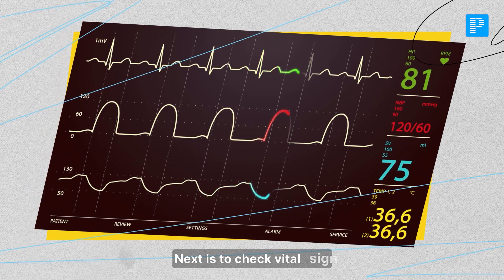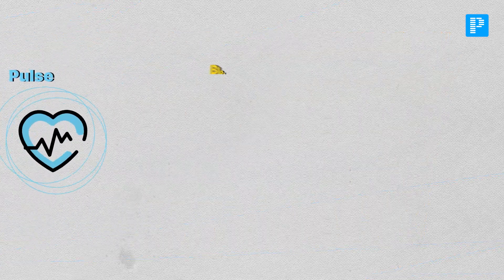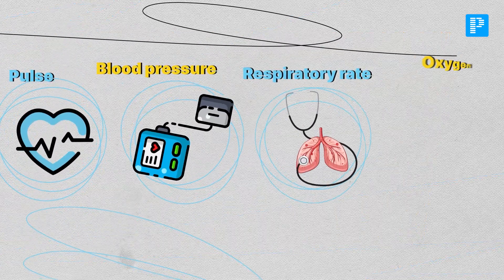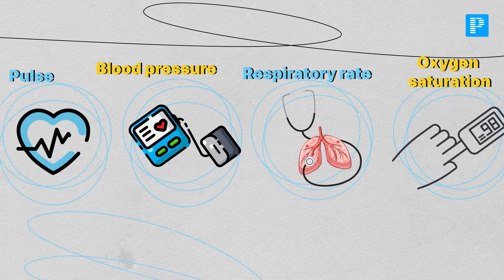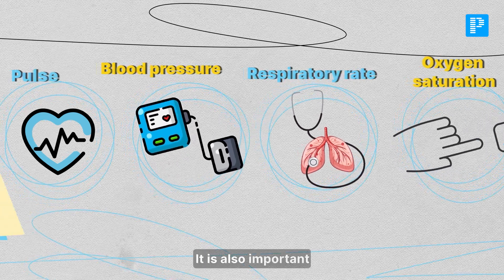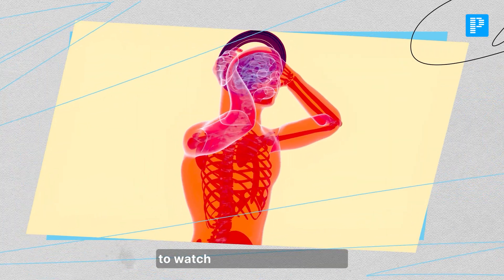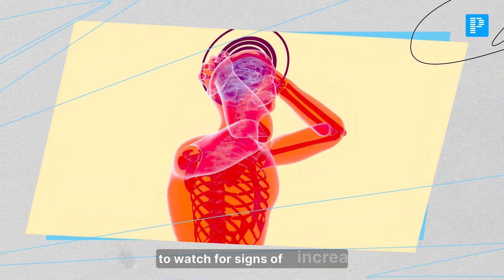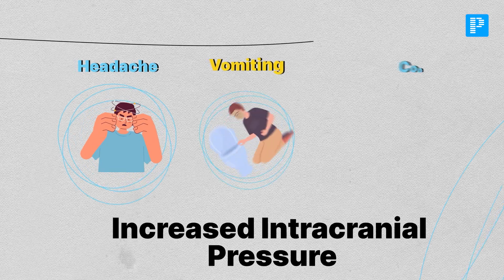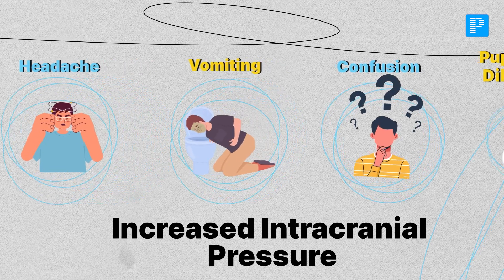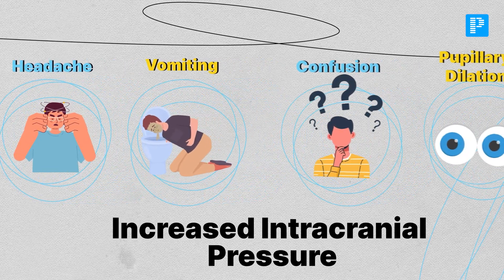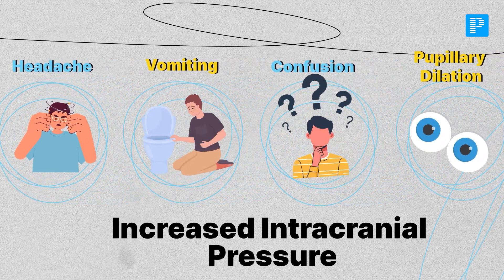Next, check vital signs, which include pulse, blood pressure, respiratory rate, and oxygen saturation. It is also important to watch for signs of increased intracranial pressure, such as headache, vomiting, confusion, and pupillary dilation.